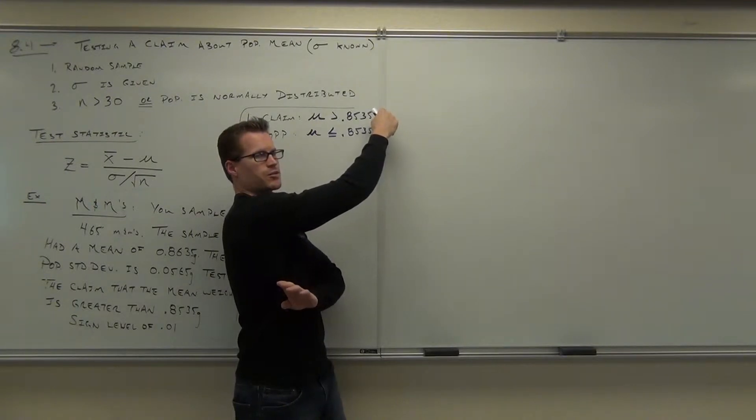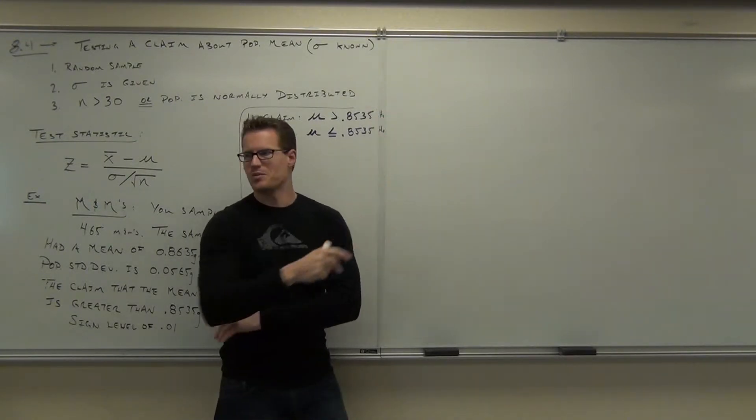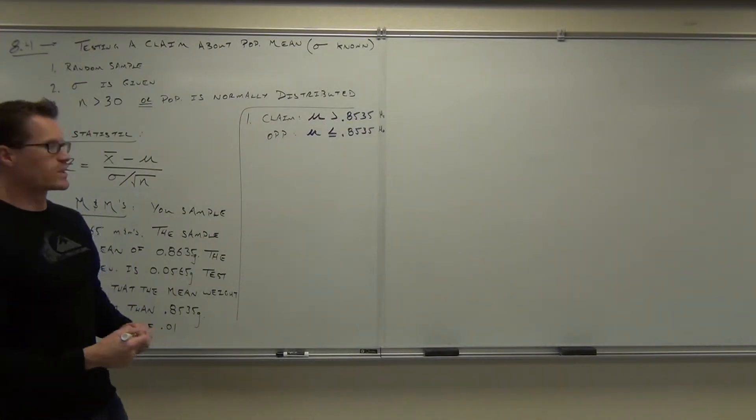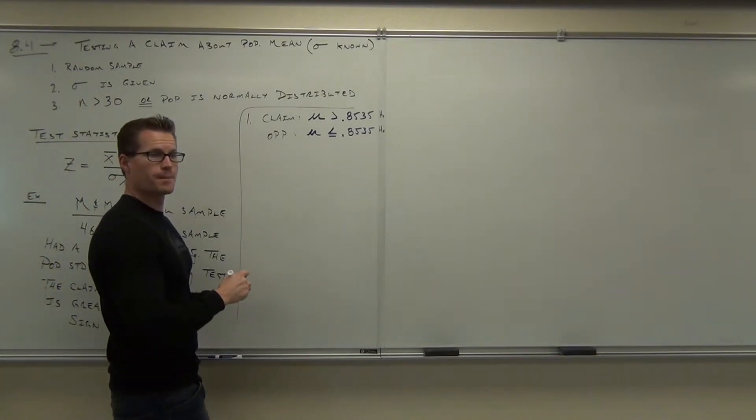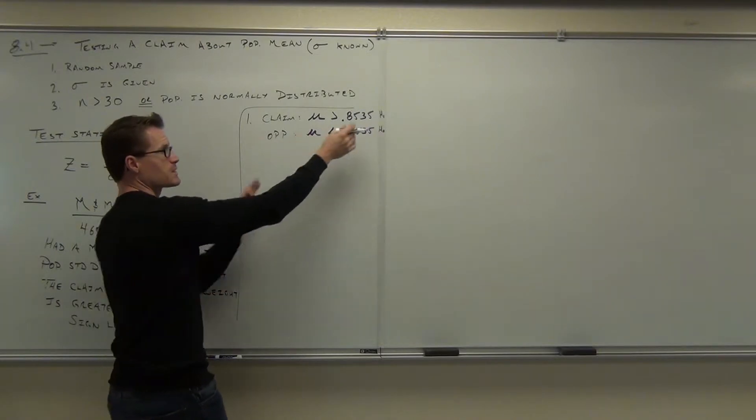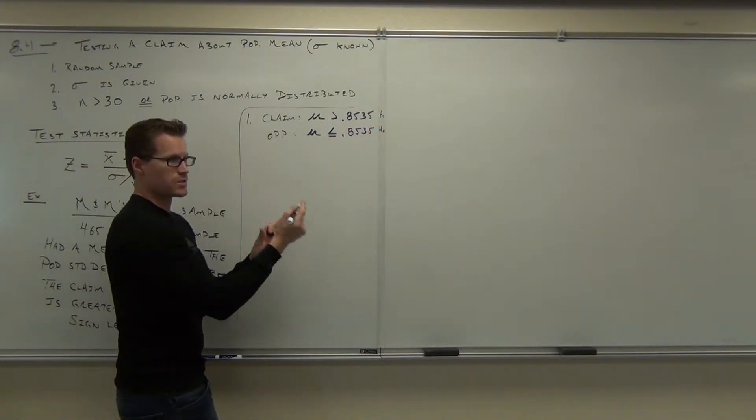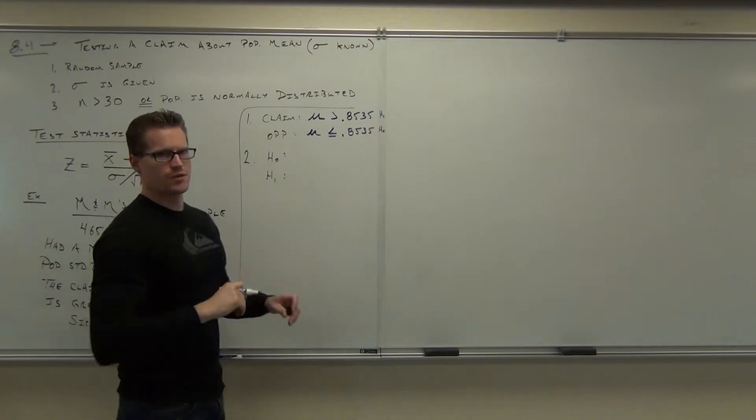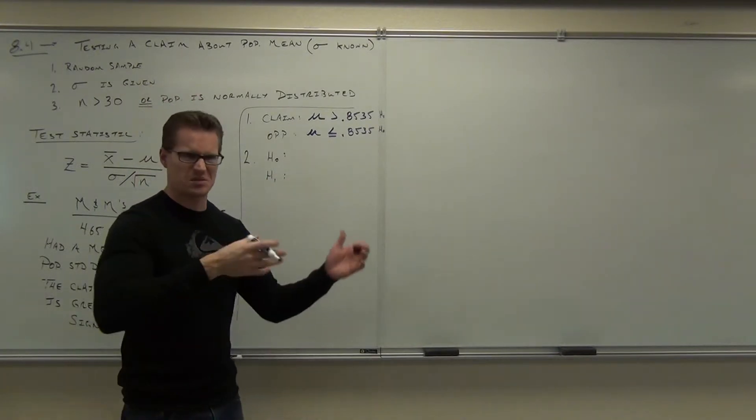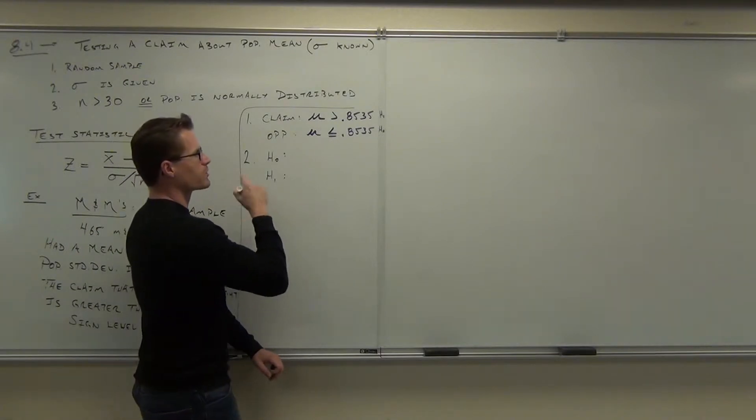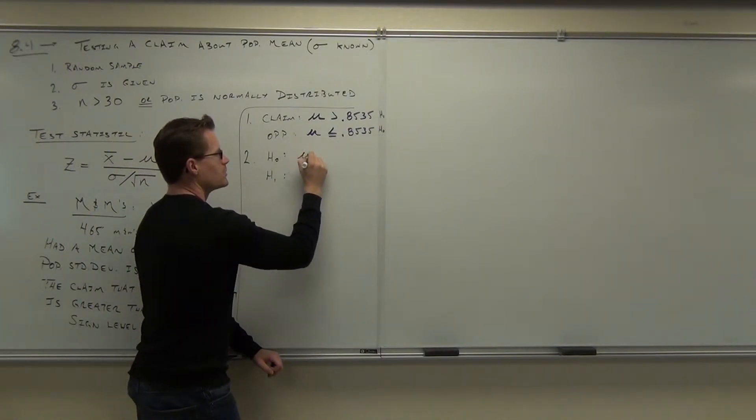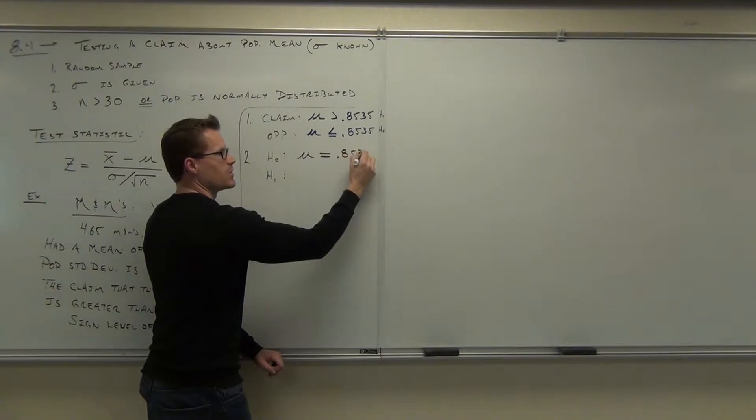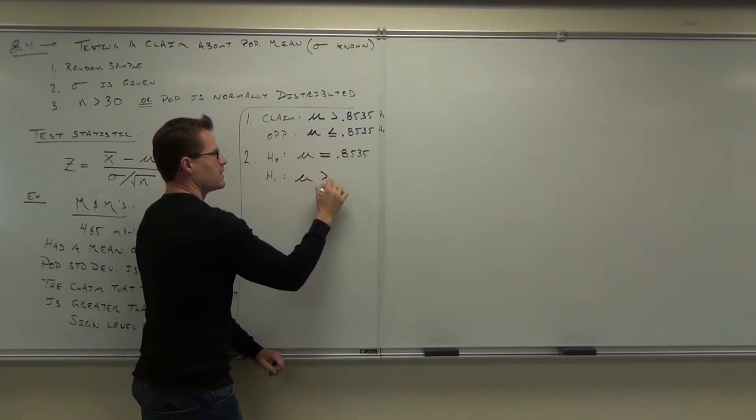So the only thing you can prove right is H sub one. Do we have the potential for proving our claim correct? Yes, we do. If these were reversed, would I have the potential for proving my claim correct? No, at that point you'd be like, why am I even doing the problem? I can't even prove right. It's basically doing this, just rewriting that, except you're going to have an equal sign somewhere instead of less than or equal to.